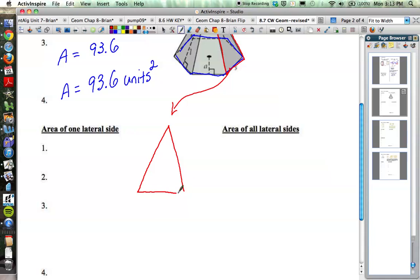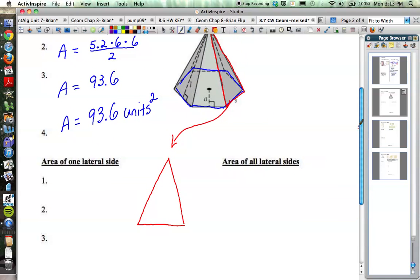We're going to sketch that out down below here. So here's our triangle. We know that the base of that triangle is the side length on the base of our hexagon here, the base of our pyramid, which was 6. So the base of our triangle is 6.